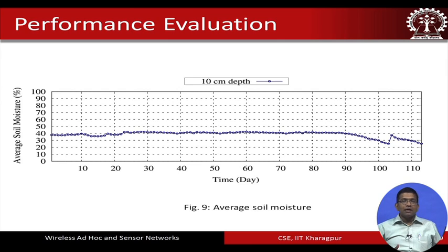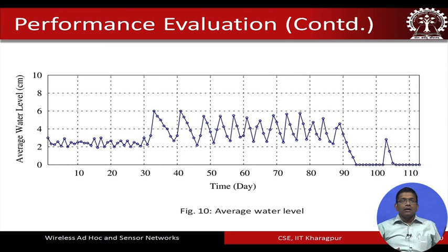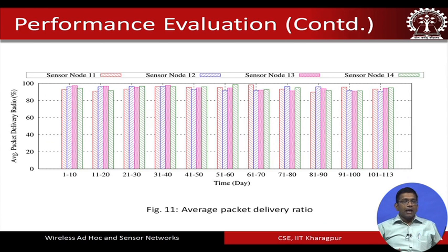The data received during the period from 2015 to 2016 includes soil moisture data plotted over time, average water level in the field over the same time span from December 2015 to April 2016, and the average packet delivery ratio by the four sensor nodes — node numbers 11, 12, 13, and 14. The data sent and the average packet delivery ratio are computed and plotted.